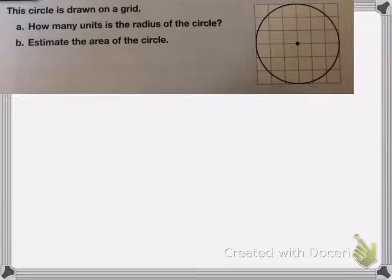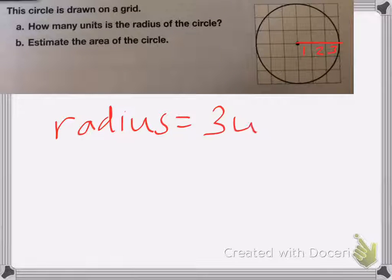So first we're going to do the radius. Remember my radius is from the inside of my circle to the edge. So if we count how many units that is, that's 1, 2, 3 units. So my radius is equal to 3 units.